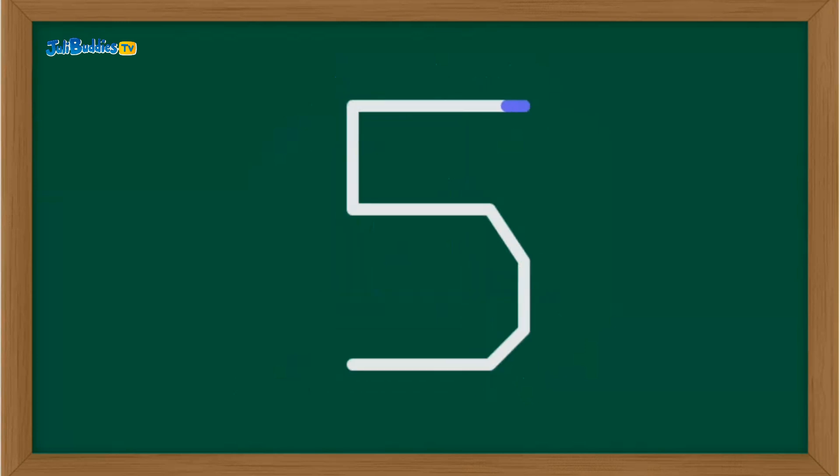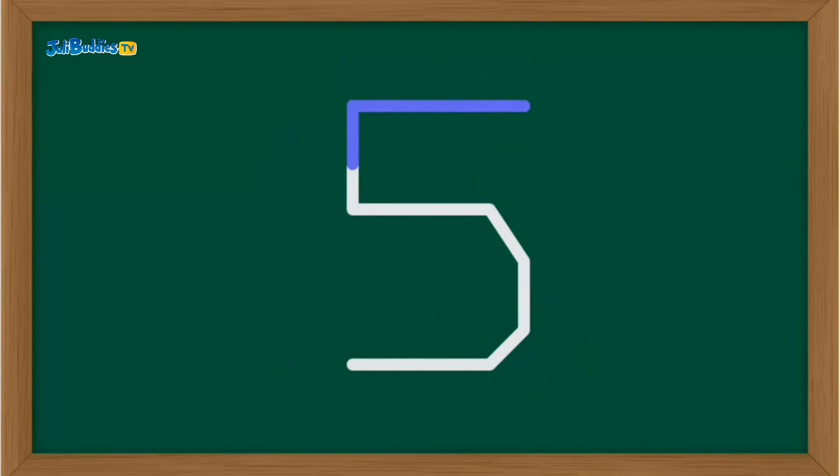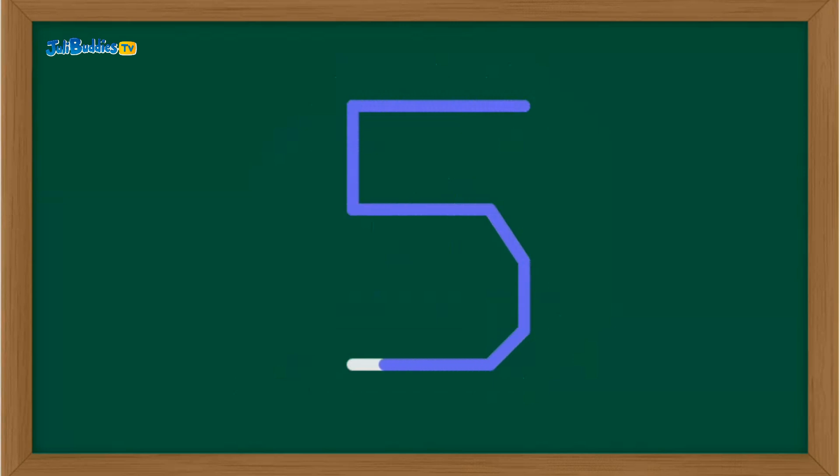Whoosh! Here comes number five. Draw a short line across, then a short line down, and a big curve for its belly. Amazing! That's number five.